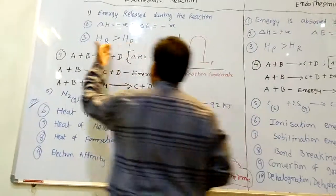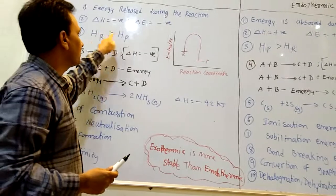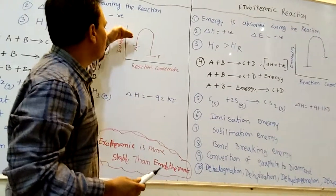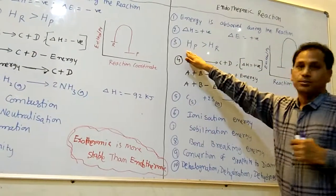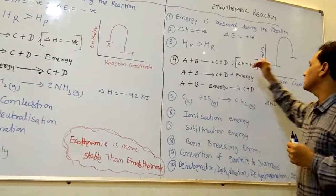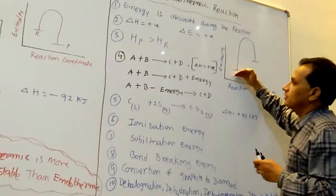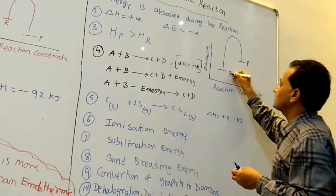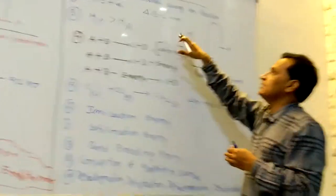For exothermic, enthalpy of the reactants is greater than enthalpy of products — reactants have more enthalpy than products. In endothermic, enthalpy of the products is greater than enthalpy of reactants — product has more enthalpy than reactants in endothermic.